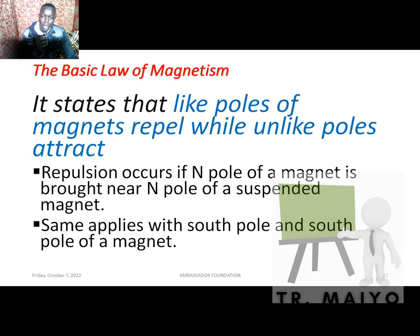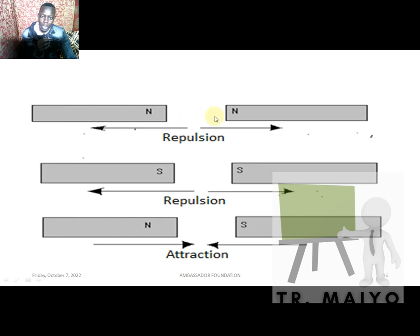There is a law called the basic law of magnetism, which states that like poles repel and unlike poles attract. Repulsion occurs when the north pole of a magnet is brought near the north pole of a suspended magnet, and the same applies to south pole and south pole. North pole and south pole attract each other. This is similar to the basic law of electrostatics with positive and negative charges.